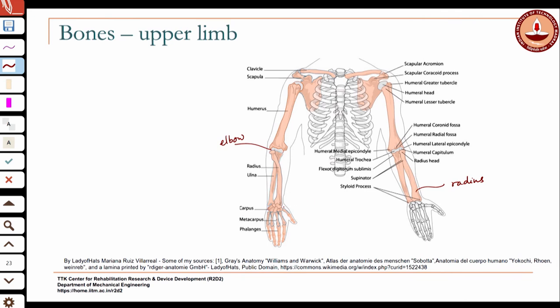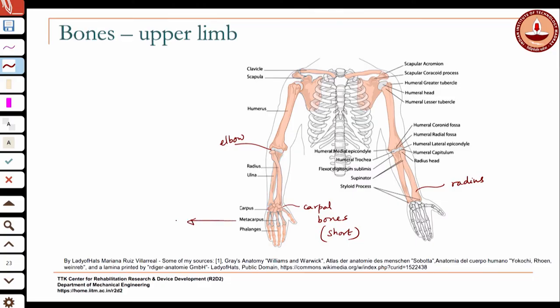Where two bones meet and form a joint, this joint is the elbow joint in the upper limb. Then you have the carpal bones of the wrist — what kind of bones are they? They are short bones. Then you have the metacarpals in the palm of your hand. These bones — what kind of bones would they be? They are long bones, the metacarpals.